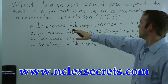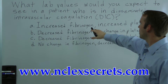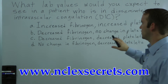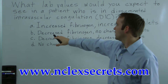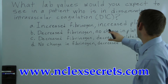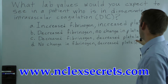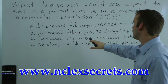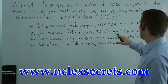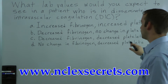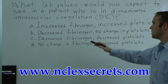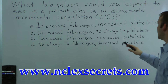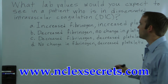Choice A says increased fibrinogen and increased platelets. B is decreased fibrinogen and no change in platelets. C is decreased fibrinogen and decreased platelets. And D is no change in fibrinogen and decreased platelets.